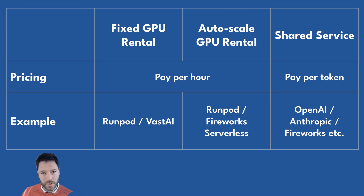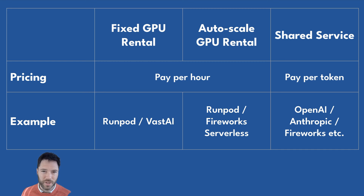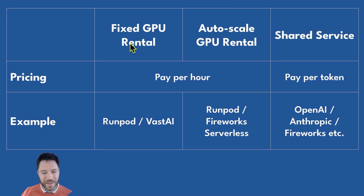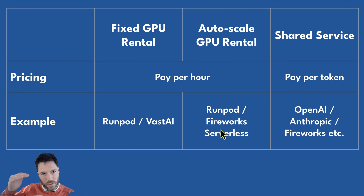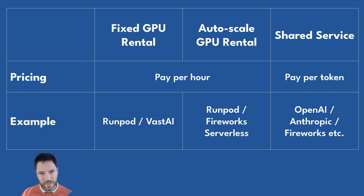The big benefit of a shared service is that many more customers use the same GPUs, so utilization is really good, allowing those services to provide very low prices. Whereas if you are the only one using the GPUs — whether that's a fixed number or auto-scaling — it's much harder to fill up every request and keep the GPUs always busy. So your effective cost per token processed tends to be quite a bit higher.